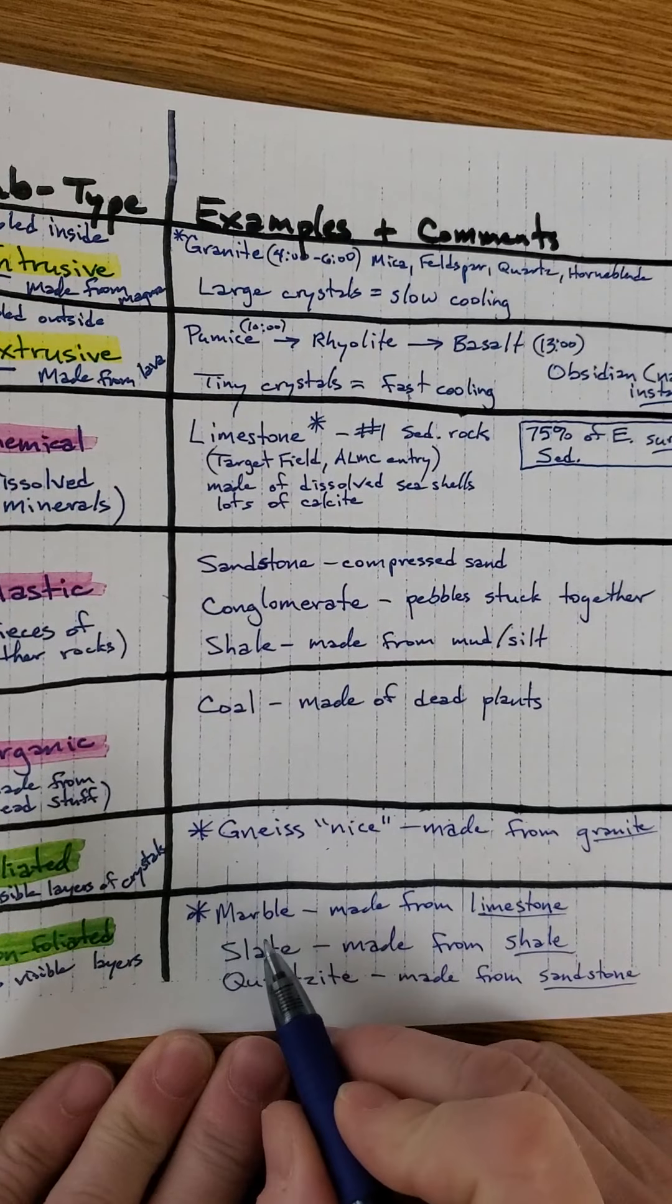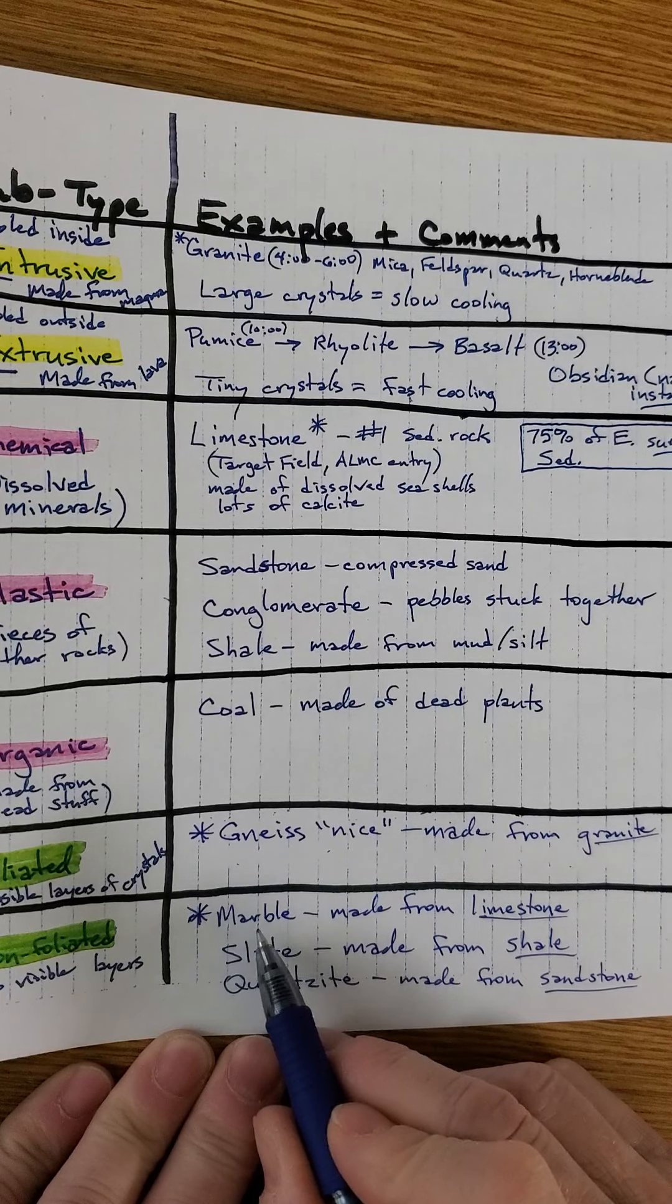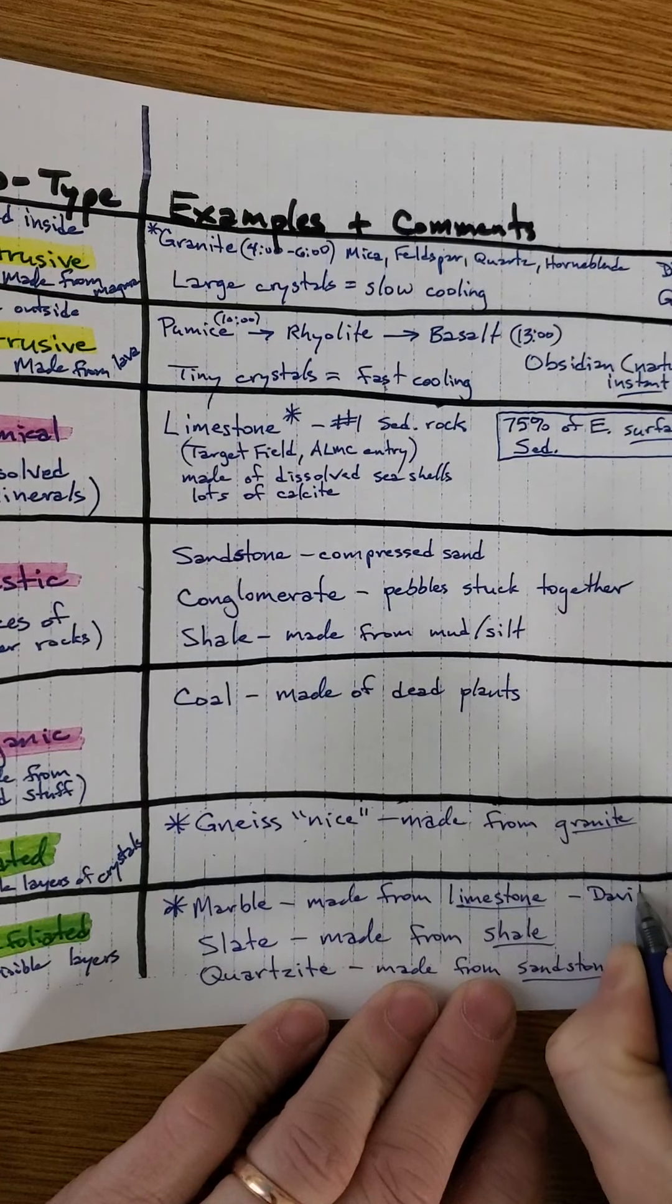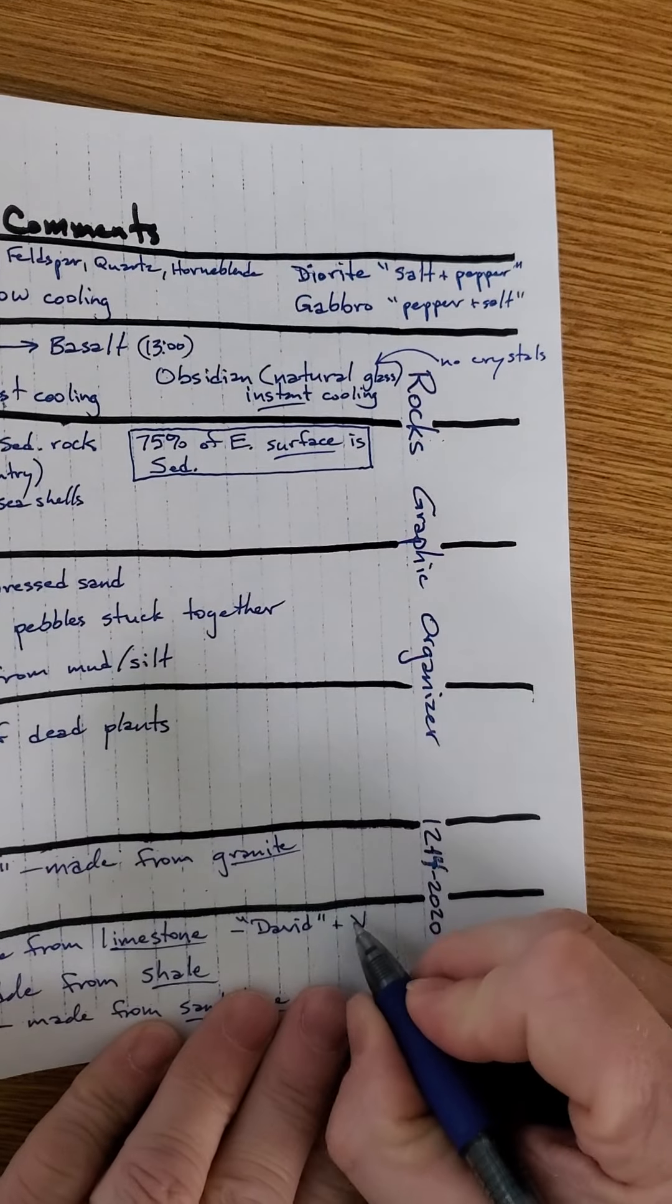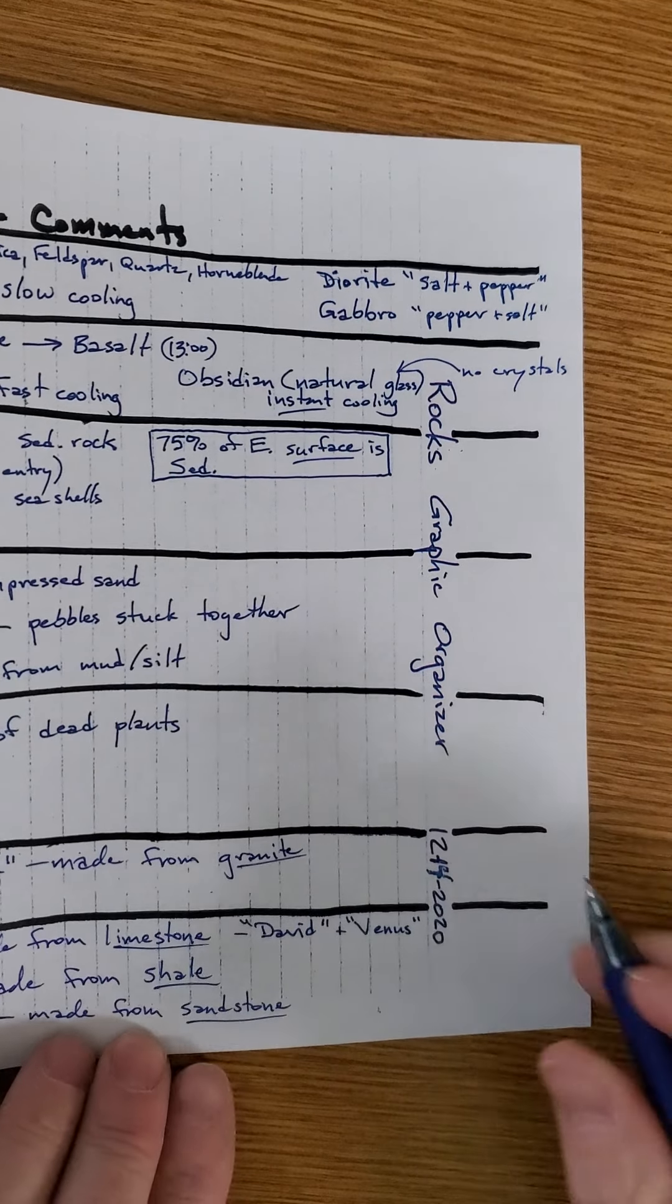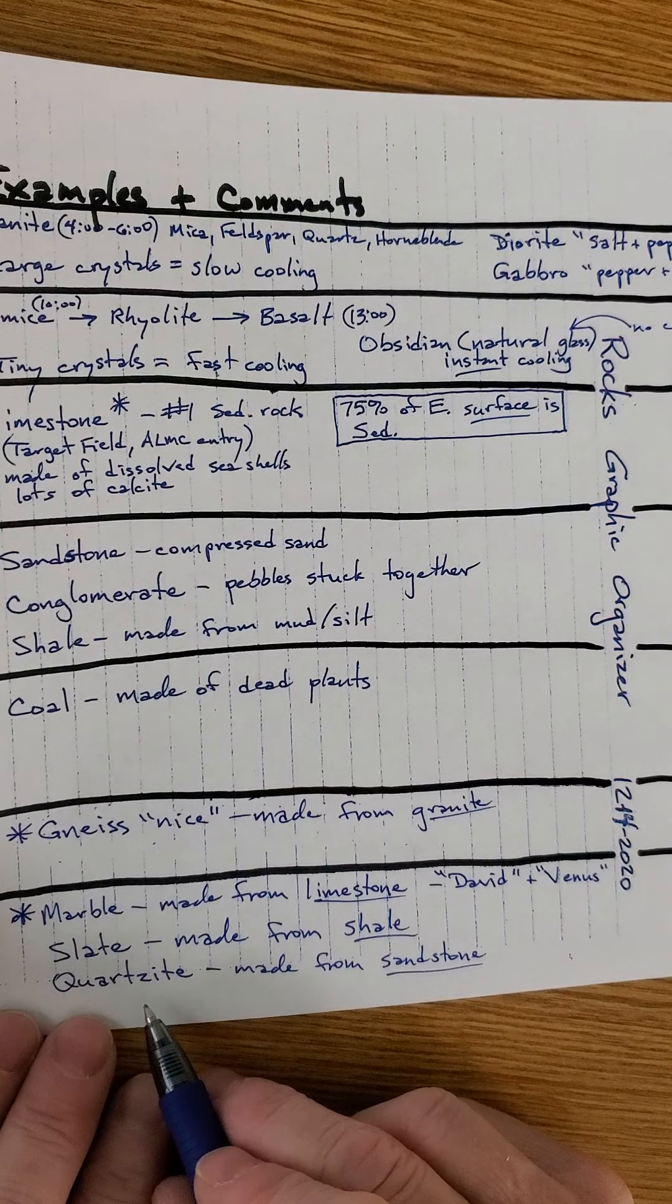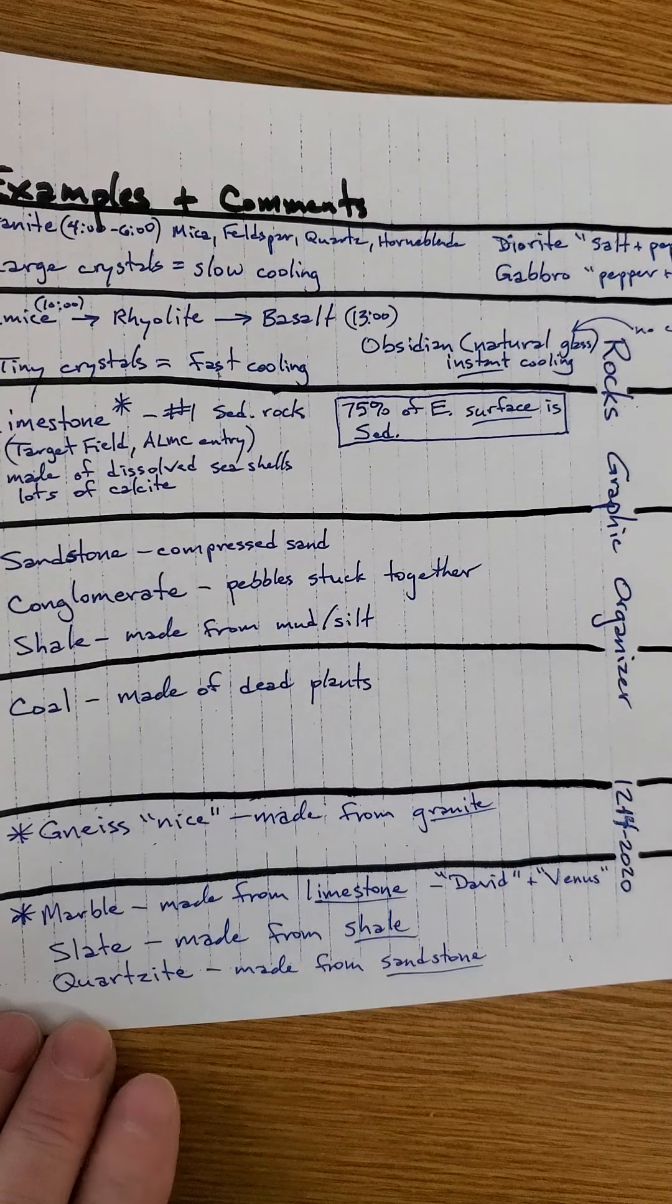I gave you three examples of non-foliated metamorphic rocks. Marble. That's the one that, let's write, David. And Venus. Those are the names of the two people. Slate is made from shale. Quartzite is made from sandstone. What else do I need you to know?